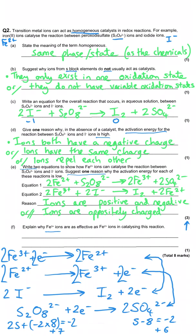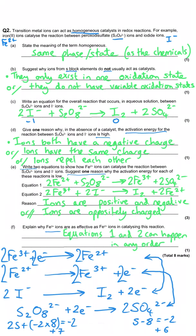The final question asks why Fe³⁺ could be just as effective as Fe²⁺ in catalysing this reaction. We wrote equation one first because we were told to — we were asked to show how Fe²⁺ acts as a catalyst. But there is no reason why we couldn't write equation two first and equation one second. That would make Fe³⁺ the catalyst producing Fe²⁺ as the intermediate. Equations one and two can happen in any order — that's all we need to say for this final mark.